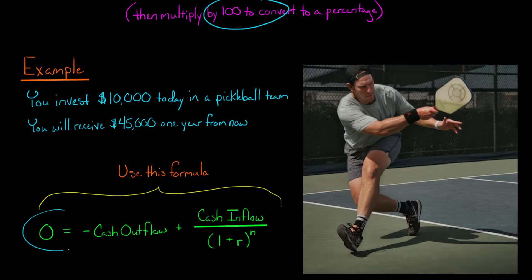We're going to set it as zero equals the cash outflow, which in this case is $10,000 plus the cash inflow of 45,000 divided by one plus R to the nth power, where n is the number of periods in the future that we're receiving this cash inflow. In this case, it's going to be equal to one. If you weren't receiving that $45,000 until five years from now, then n would be equal to five.